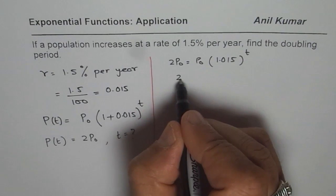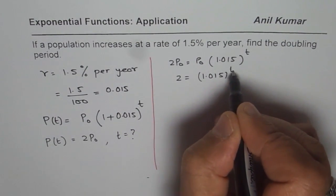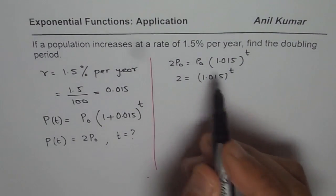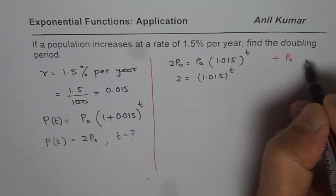Dividing by P₀ we get 2 equals to 1.015 to the power t. So we divided both sides by P₀.